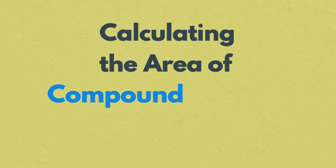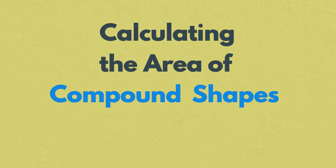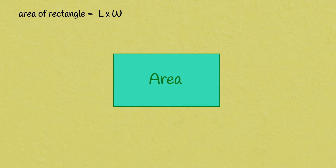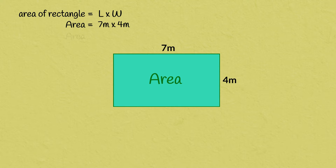Calculating the area of compound shapes. Area is the space inside a 2D shape. The rule for calculating the area of a rectangle is length times width. So to find the area of this shape we take the length and multiply it by the width. 7 meters times 4 meters is 28 meters squared.